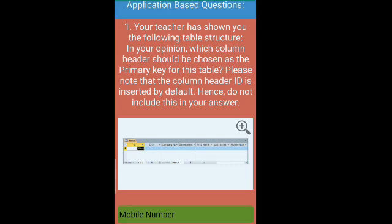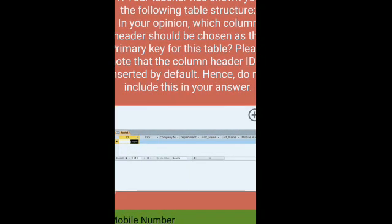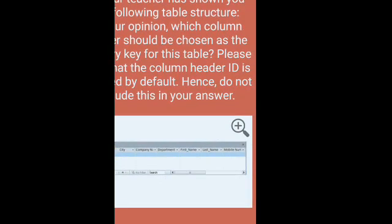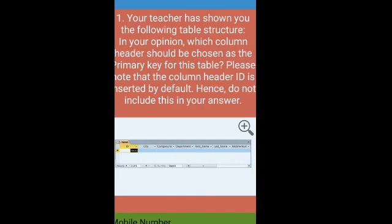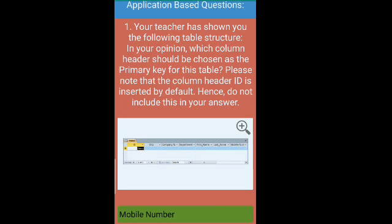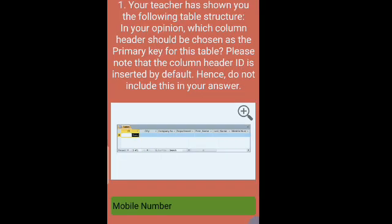Now let us see the ABQ. First question: Your teacher has shown you the following table structure. In your opinion, which column header should be chosen as the primary key for this table? Please note that the column header ID is inserted by default, hence do not include this in your answer. Here we have a table. This ID is coming by default, this cannot be the answer. City, company name, department, first number, last number, and mobile number are the field names. So the primary key will be the mobile number. The right answer is mobile number.